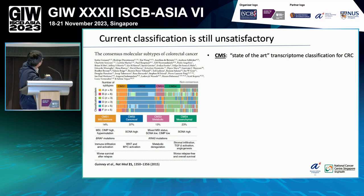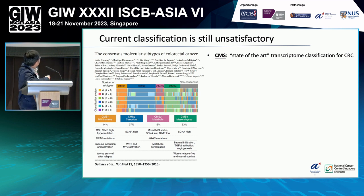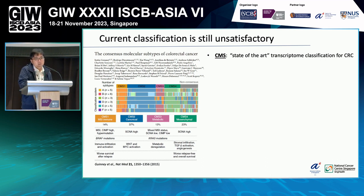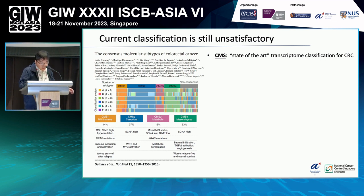The first is CMS1, characterized by immune infiltration and activation. The second is CMS2, characterized by WNT and MYC activation. The third is CMS3, characterized by metabolic dysregulation. And the last is CMS4, which is the metastatic subtype characterized by high stromal content.